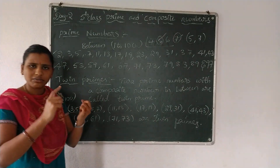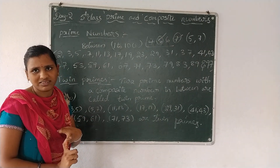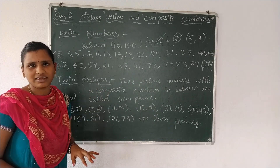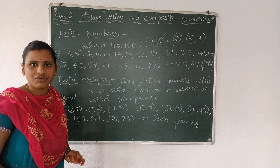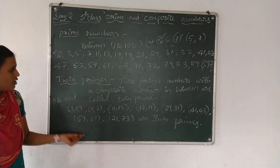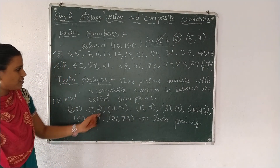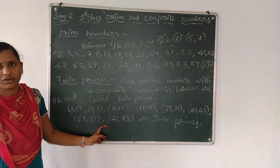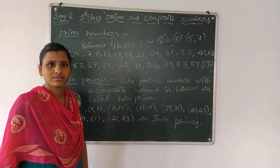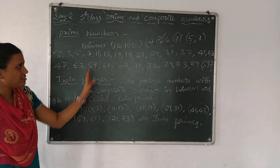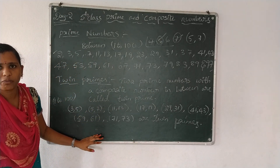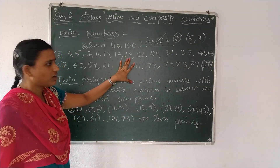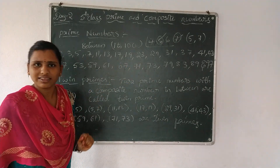Now write down prime, composite, and twin prime numbers. Note it in your book and practice a number of times. Load up the twin prime definition and numbers also. Practice all those prime, composite, and twin prime numbers. Thank you.